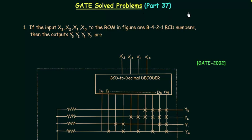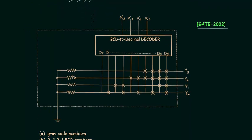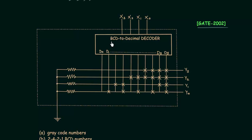In this part I will solve two problems, both taken from the GATE 2002 exam. In the first problem there are four inputs x3, x2, x1, x0 given to the ROM. The input is an 8421 BCD number and we have to find outputs y3, y2, y1, y0. There are four inputs given to the BCD to decimal decoder, and D0 to D9 are the 10 outputs of this decoder.